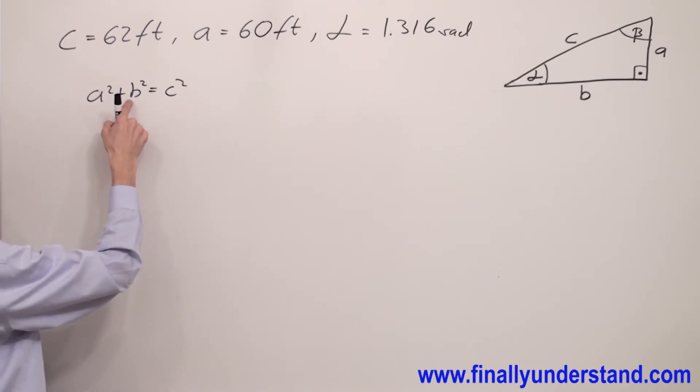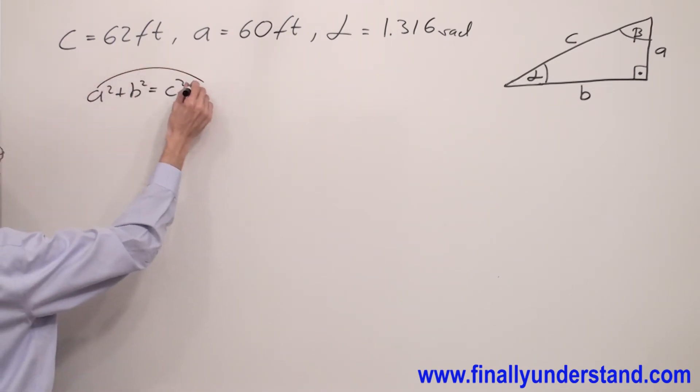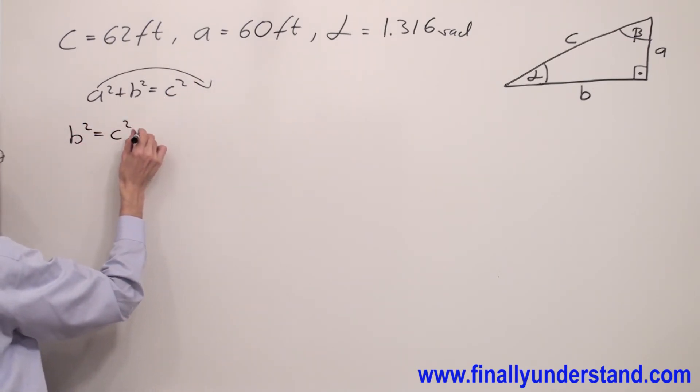Next, we're supposed to solve this formula for B. So I have to move my A to the right side. So B squared equals C squared minus A squared.